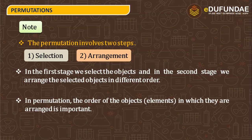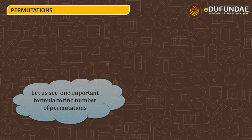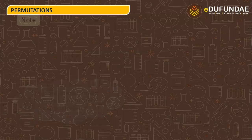In permutations, the order of the objects or elements in which they are arranged is important. For example, if you write A, B it is different from B, A. In permutations, every object's position matters — here A is in the first position and B is in a different position. So all these arrangements are distinct permutations.